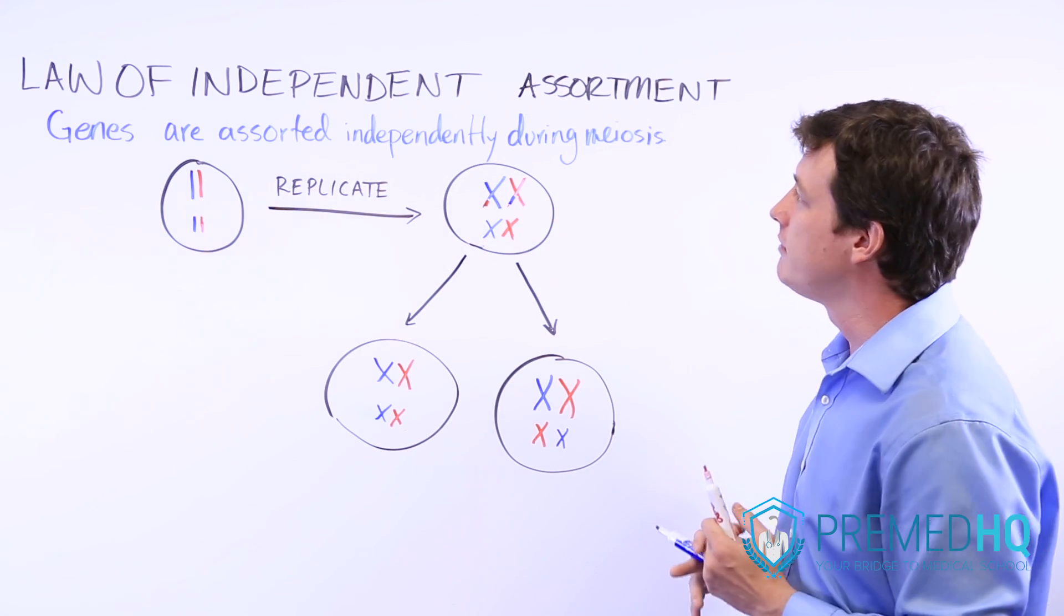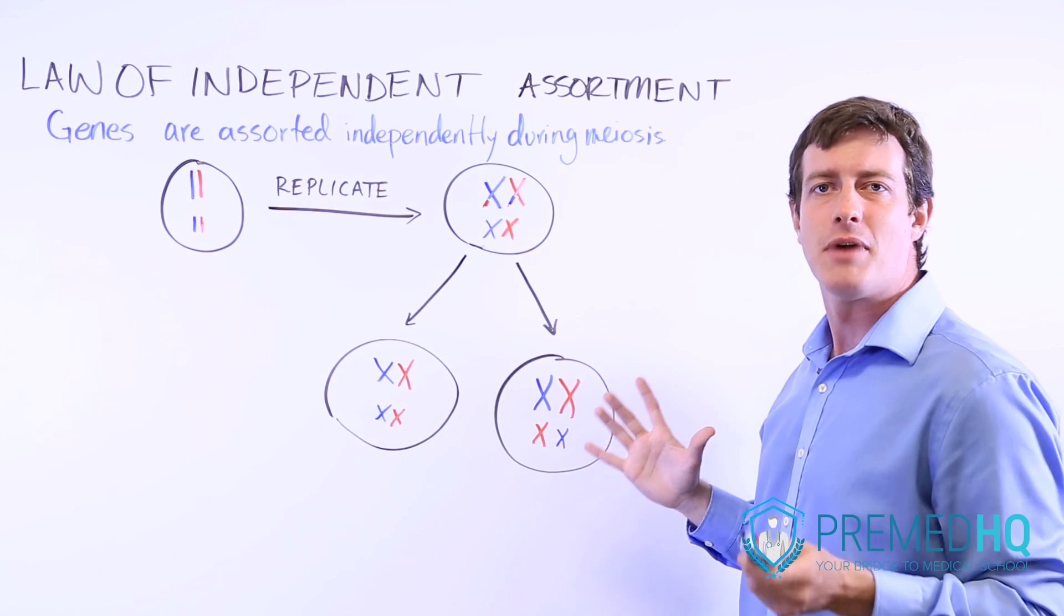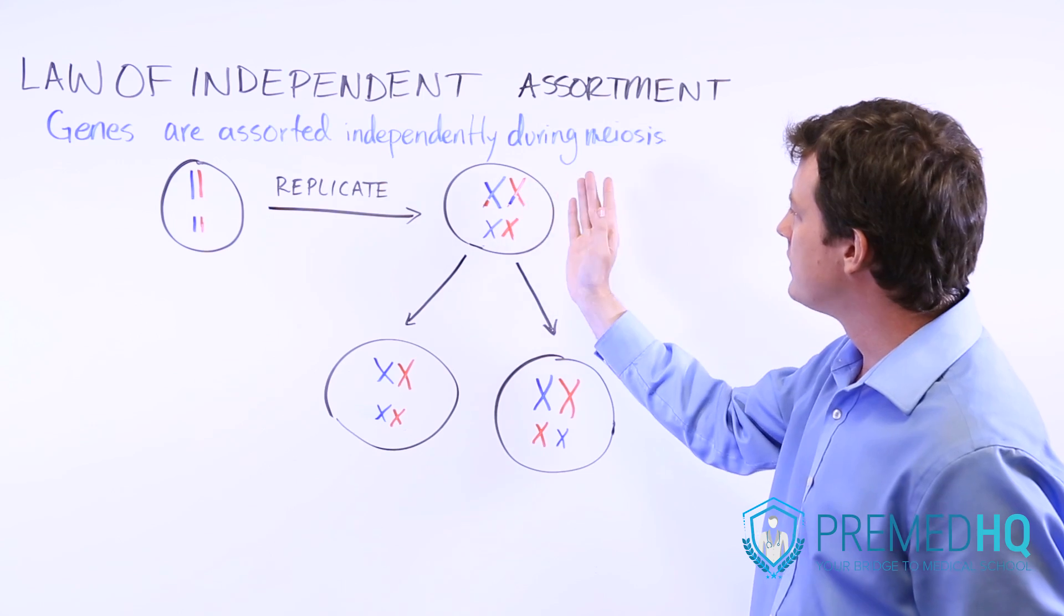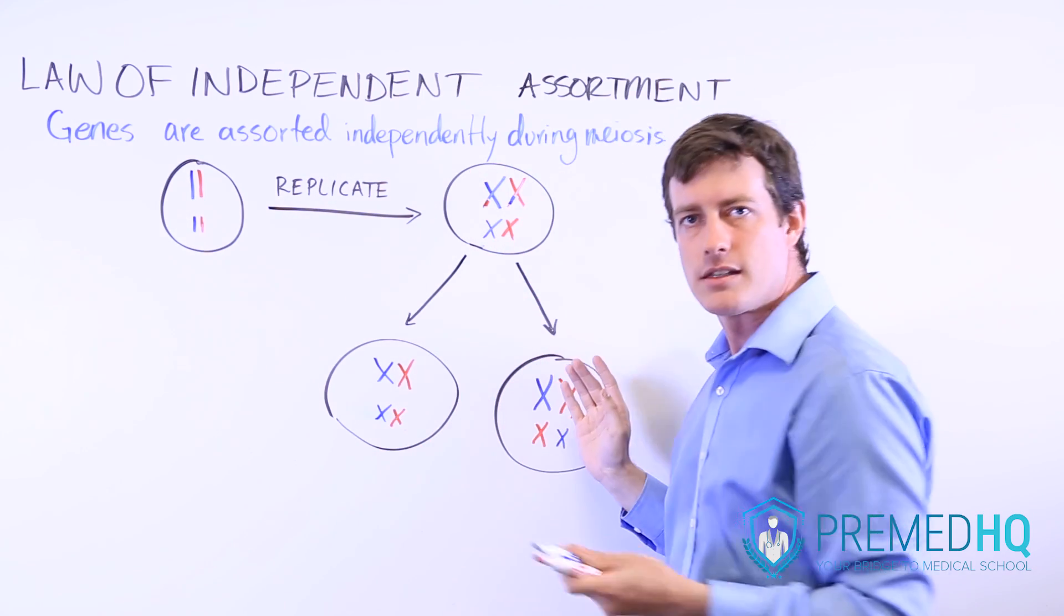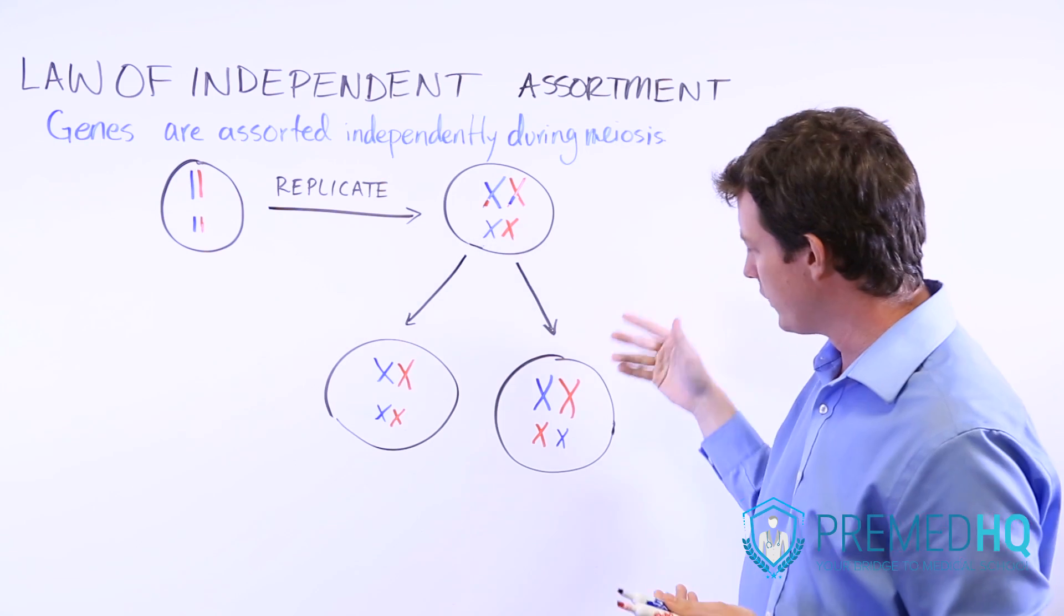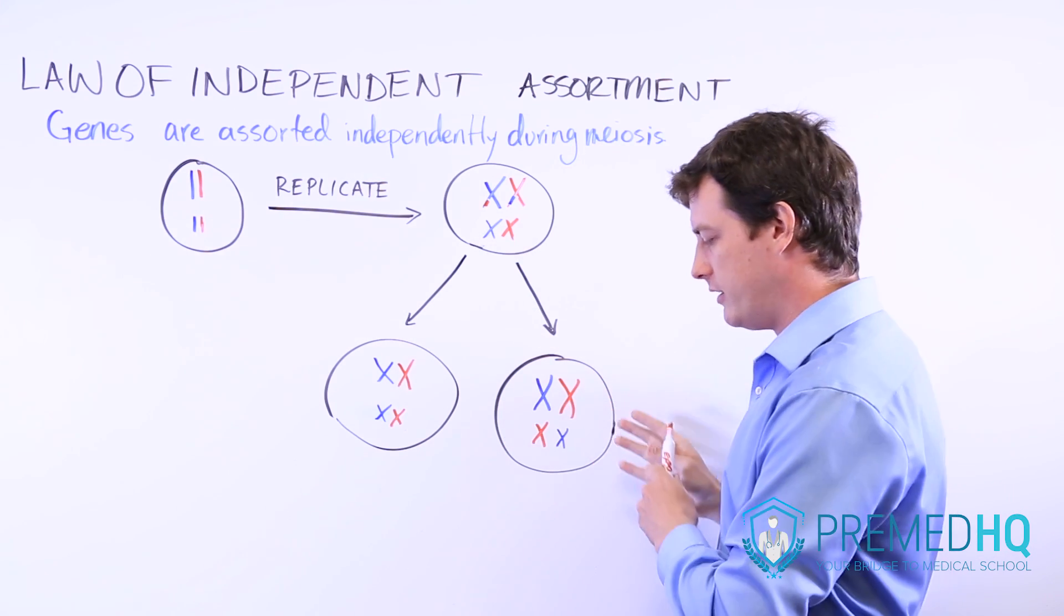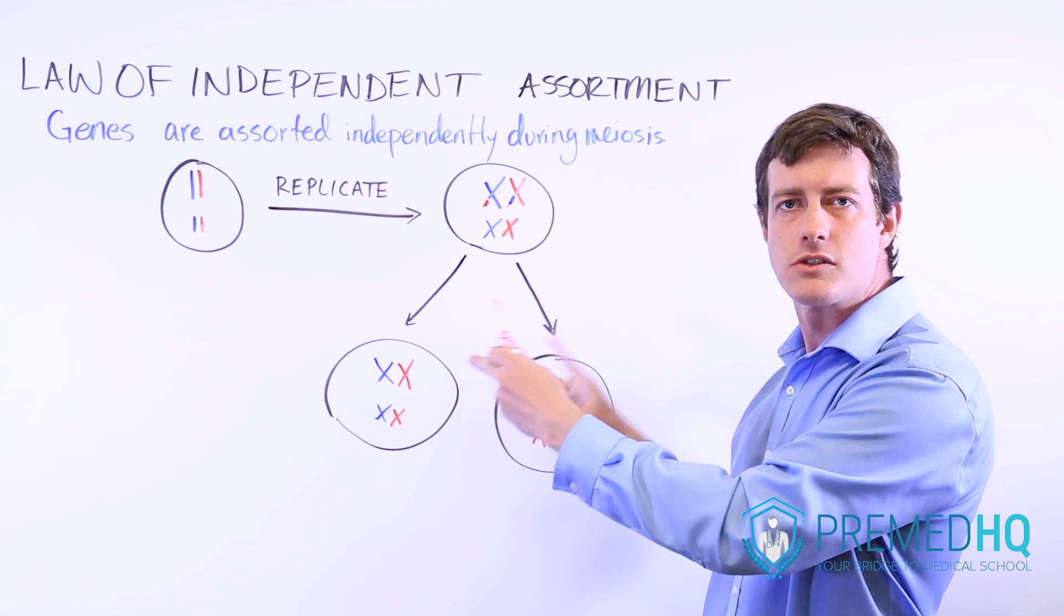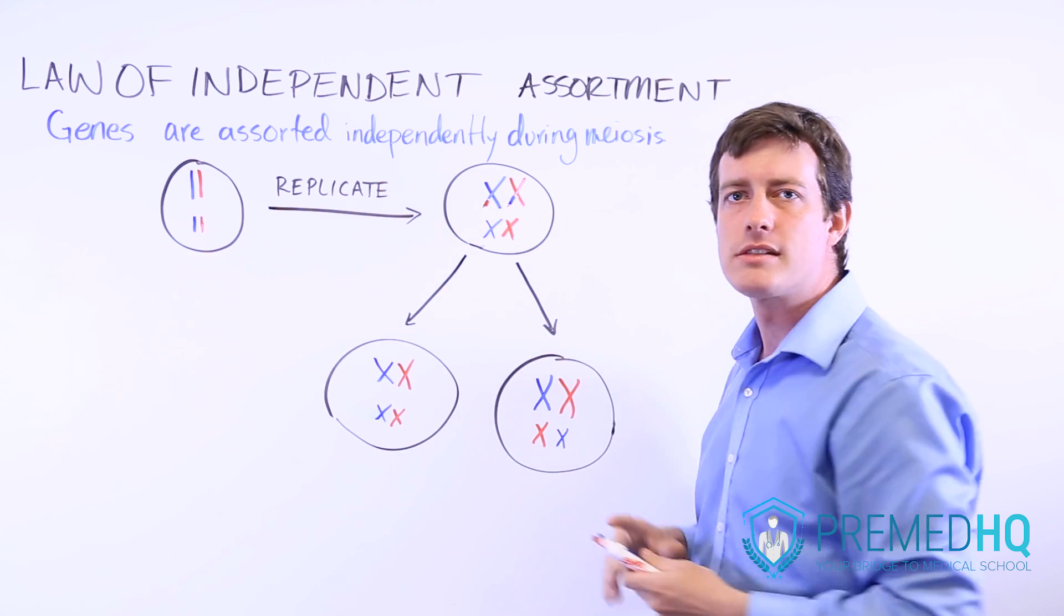And so the law of independent assortment is something that was developed before we knew a lot about the meiosis process. But what we see is that because of the differential alignment on this metaphase plate and the crossing over, you're no more likely to inherit two of the same, two genes together as you are to have those two alleles be separated and inherited in different gametes.